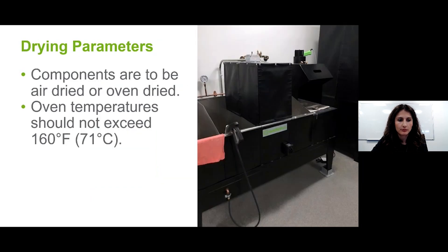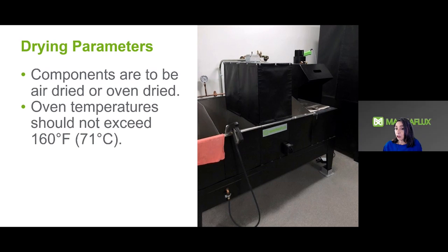Components have to be air dried or oven dried. Oven temperatures should not exceed 160 degrees Fahrenheit or 71 degrees Celsius. If a component has holes or cavities, care should be taken to make sure any excess water has been removed before being dried in the oven, as excess water could have an adverse effect on developer application and inspection.